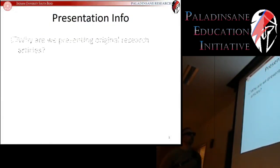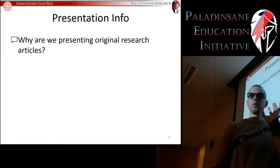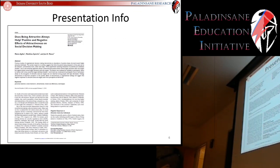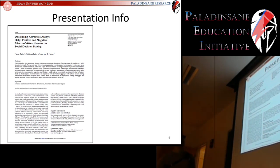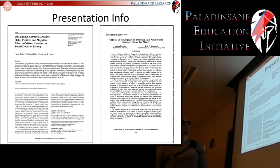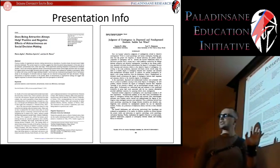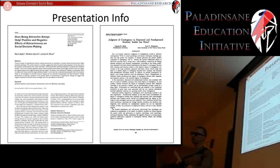It's going to be an original research article — that is the topic you need to present on. If you find an article like 'Does Being Attractive Always Help? Positive and Negative Effects of Attractiveness on Social Decision Making,' and you're researching in the area of perception of attractiveness, that's what your presentation is on. It has to be an original research article you're going to use. You can definitely use other sources for your research work, but for this presentation it must be a strictly academic journal article.